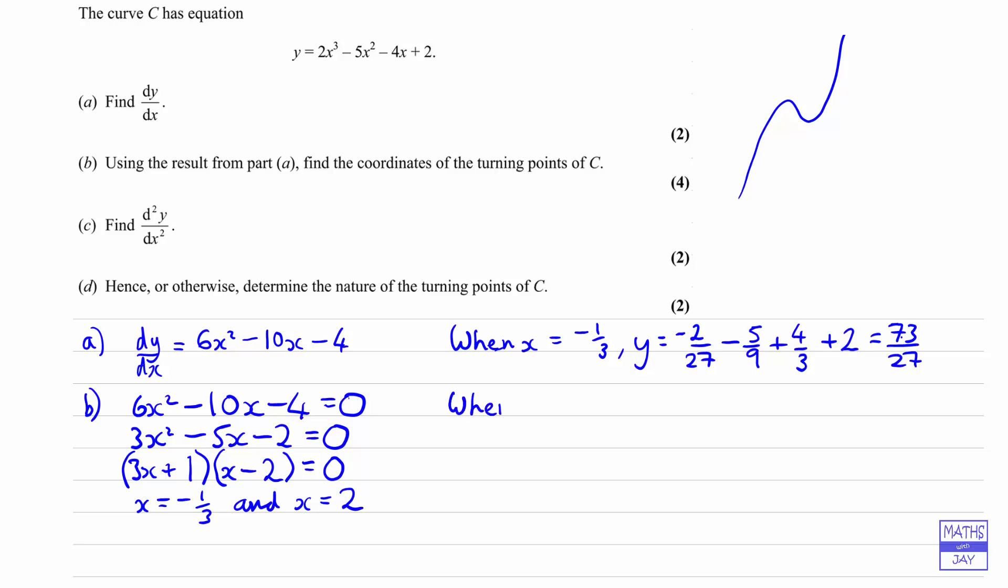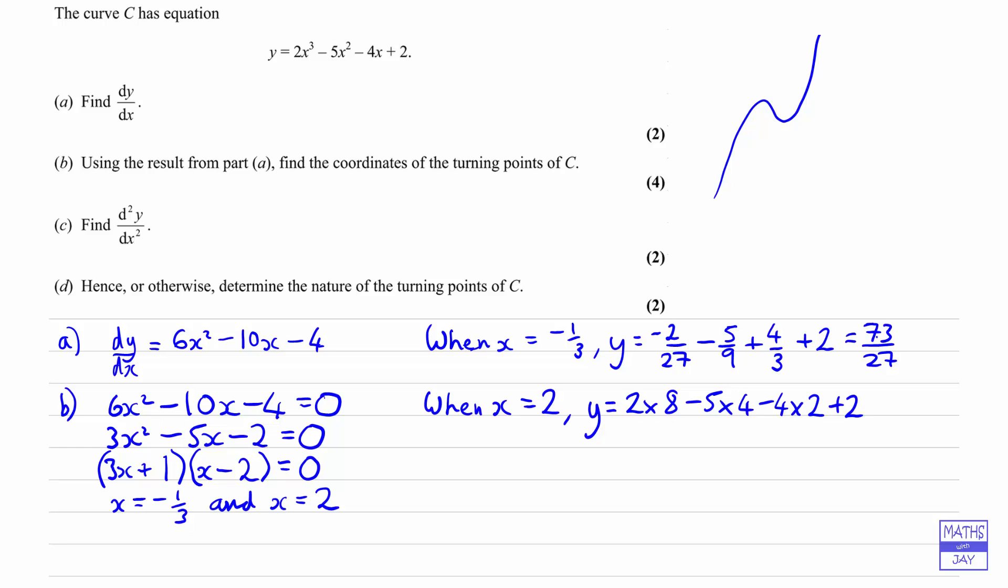So that's the value of y when x is minus 1 third. Now let's look at our other x value, which will be simpler. When x is 2, y is going to be 2 times 2 cubed, so 2 times 8 minus 5 times 2 squared, so minus 5 times 4, and then we've got minus 4 times 2, and adding the 2 at the end. So we've got 16 minus 20 minus 8 plus 2, so that's going to be equal to minus 10. So the turning points of C are at minus 1 third, 73 over 27, and the other point is 2, negative 10.